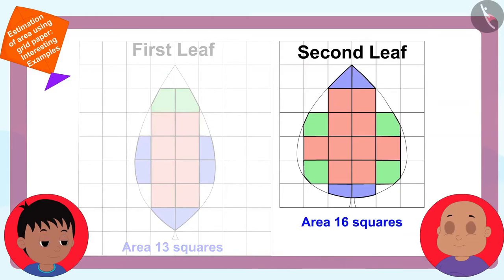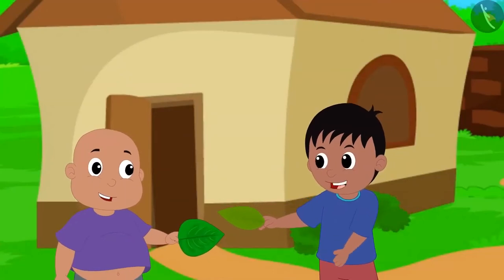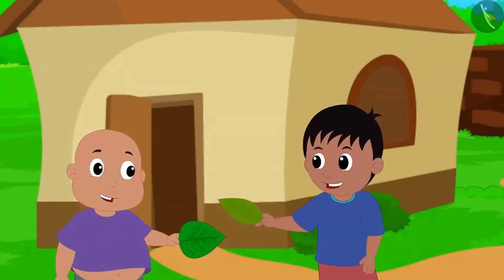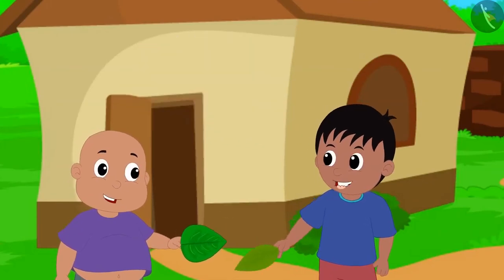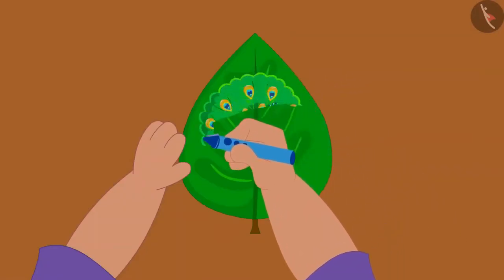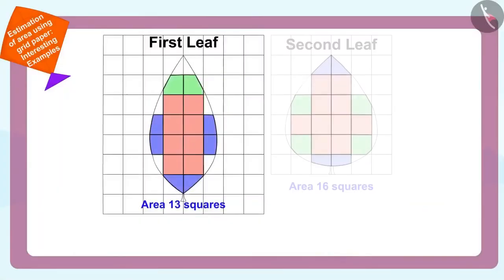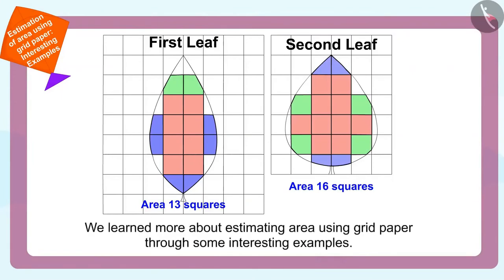Well done, Babalu. We came to know which is the biggest leaf, and you also learned to find the area using a grid paper. Now let us quickly take part in the competition by painting a beautiful picture on this bigger leaf. The two friends made a beautiful painting on the second leaf. Children, in this video we learned more about estimating area using grid paper through some interesting examples. In the next video, we will look at some of the misconceptions related to this.